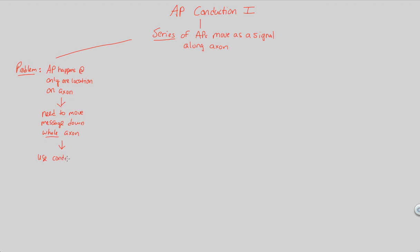You solve the problem using conduction. So you use this process known as conduction. This series of action potentials moving as a signal along the axon happens via conduction. And that's basically the answer to our problem, the solution to our problem.